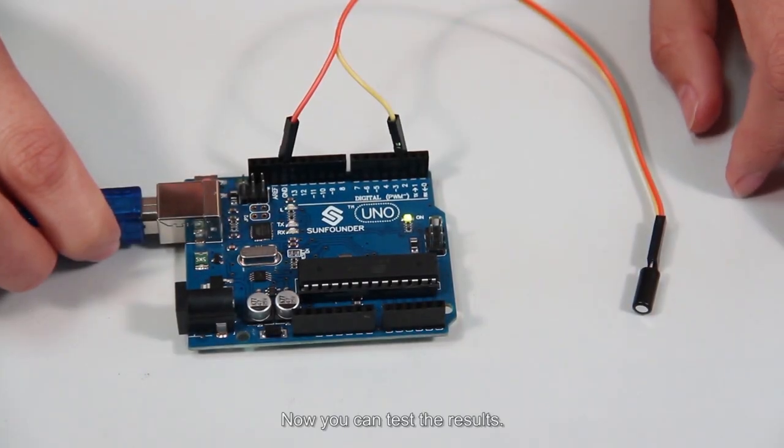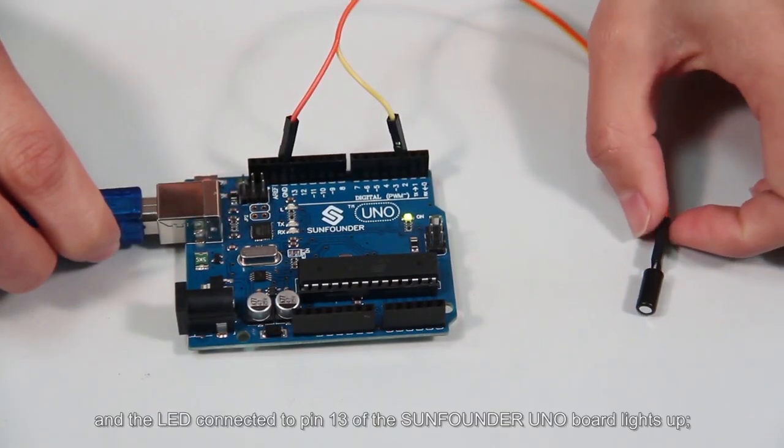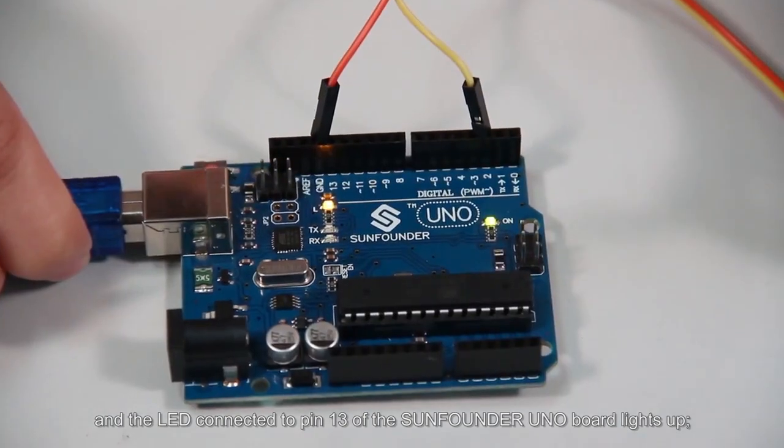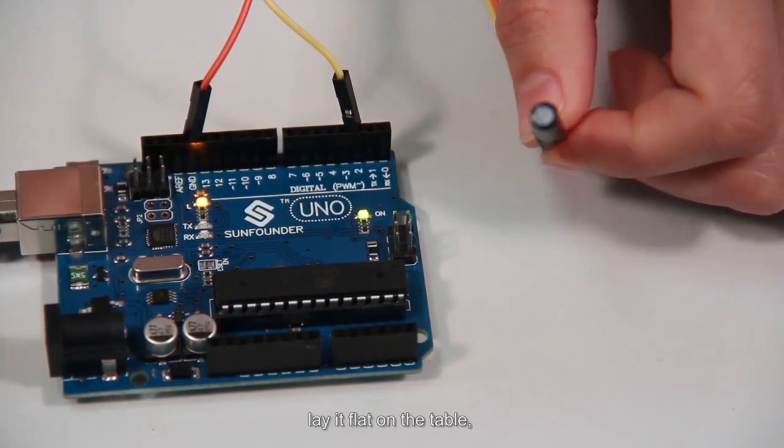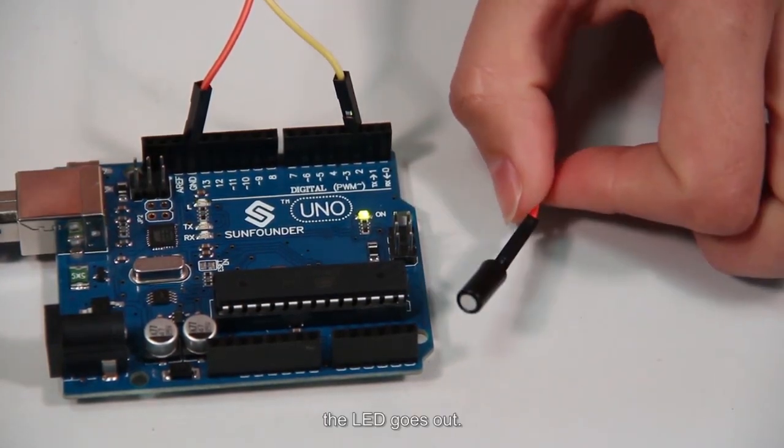Now you can test the results. Tilt the switch and the LED connected to pin 13 of the SunFounder UNO board lights up. Lay it flat on the table, and the LED goes out.